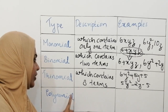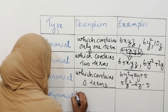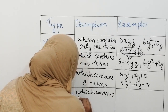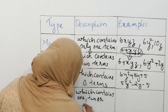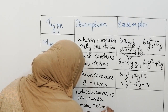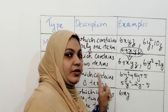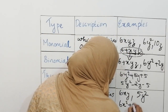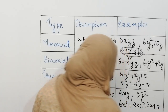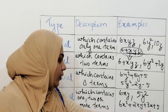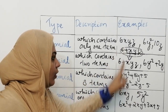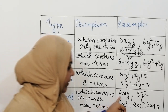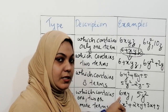Next one is polynomial, which contains 1, 2, 3 or more terms. You know that 6xy is a monomial, but actually it is a polynomial also. An expression with more than three terms is called a polynomial. In fact, monomial, binomial, and trinomial together are all what we call polynomial. So polynomial means any expression which contains 1, 2, or more terms — even 6xy is a polynomial.